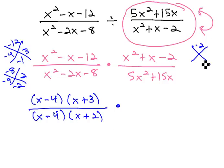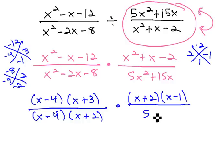In the numerator, we're multiplying to negative 2, adding to negative 1. Again, there's lots of factoring with rational expressions. 2 and negative 1, so it's x plus 2, x minus 1. In the denominator, there's a GCF of 5x, leaving us behind x plus 3.